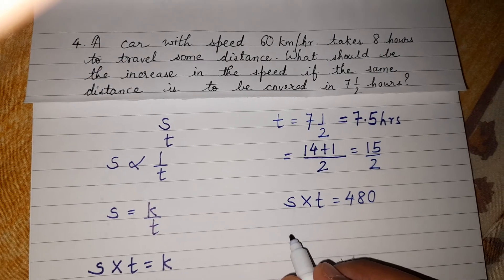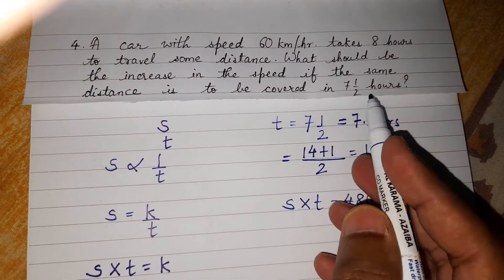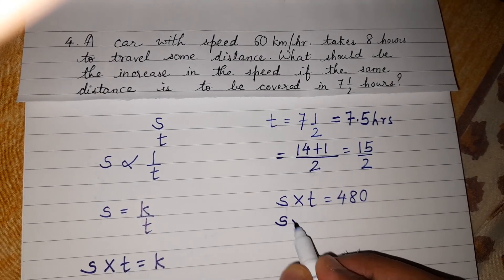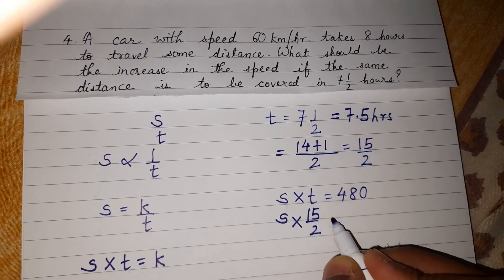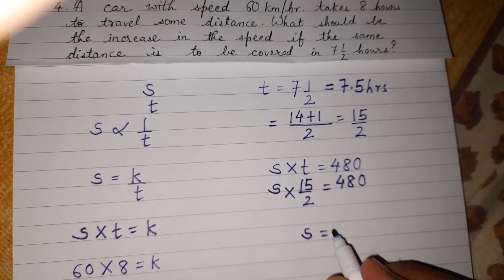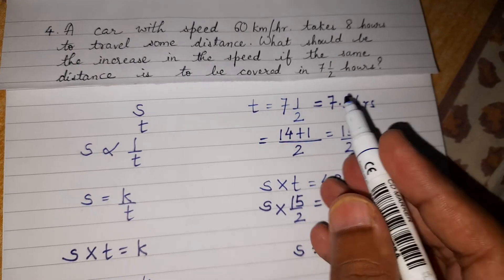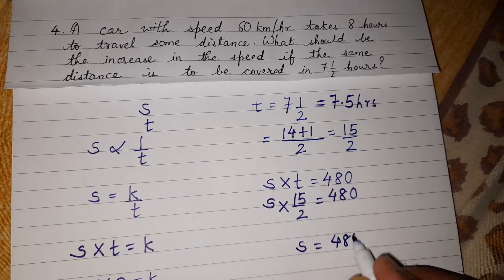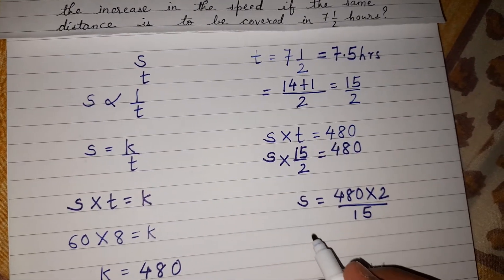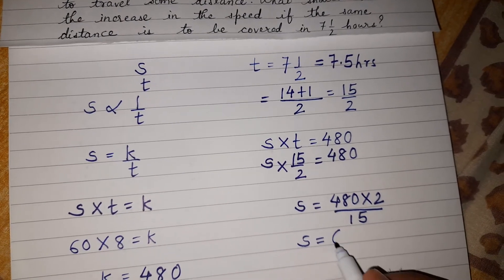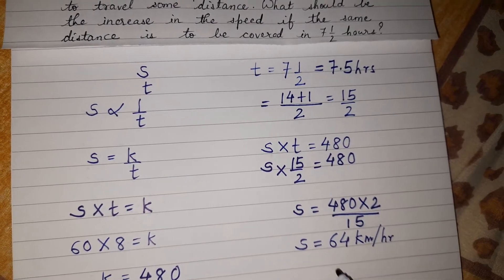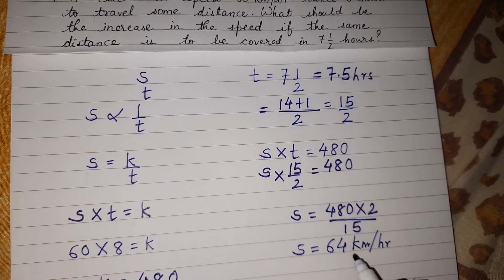We need to find the speed when the time is 7.5 hours, which is 15 by 2. So s into 15 by 2 equals 480, giving s equal to 480 multiplied by 2 divided by 15. Solving this, s equals 64 kilometers per hour.